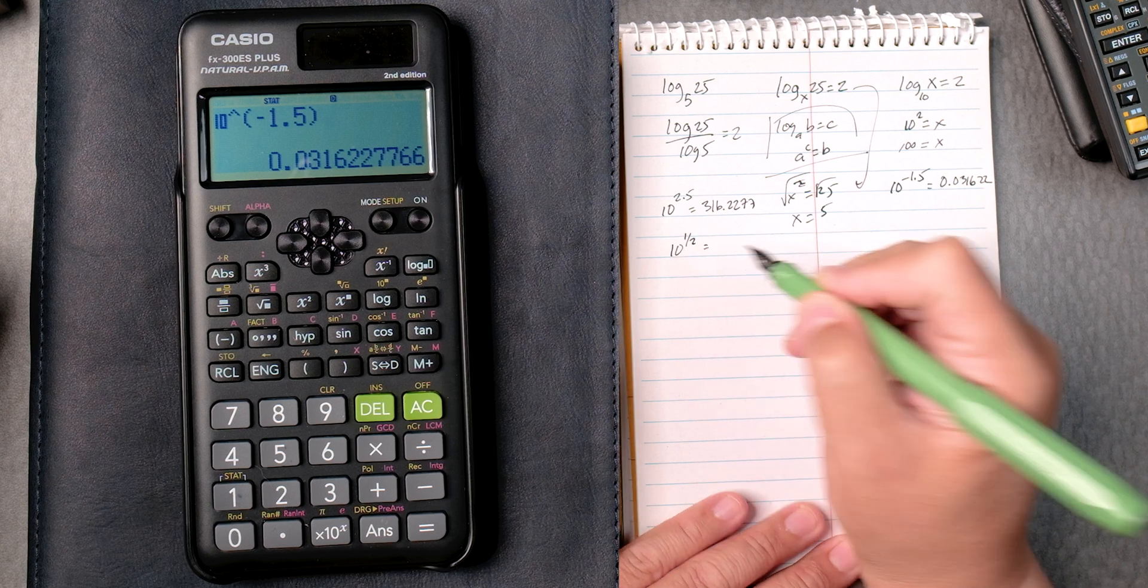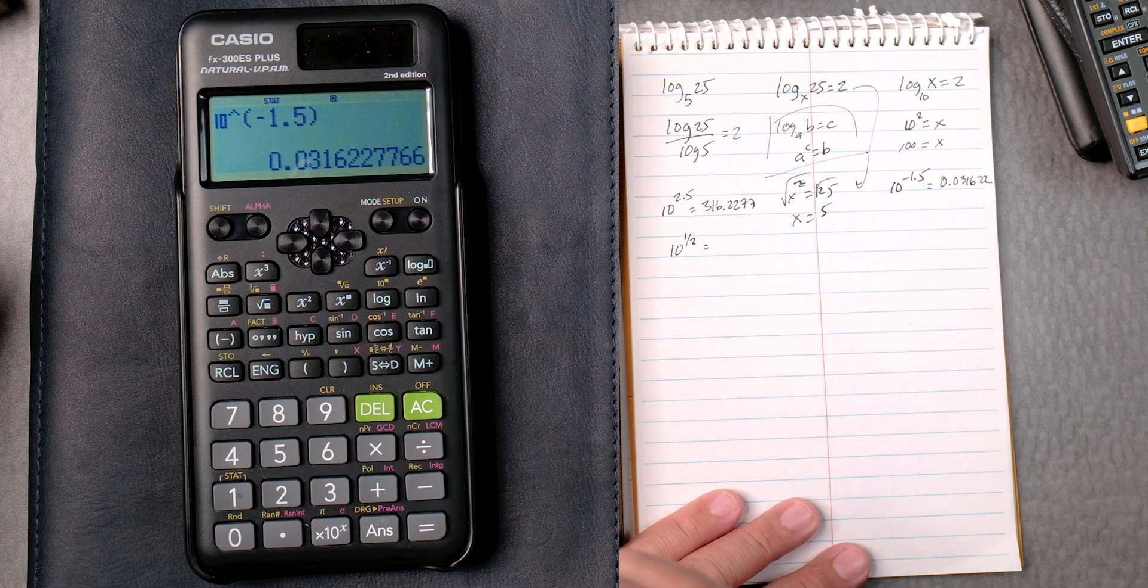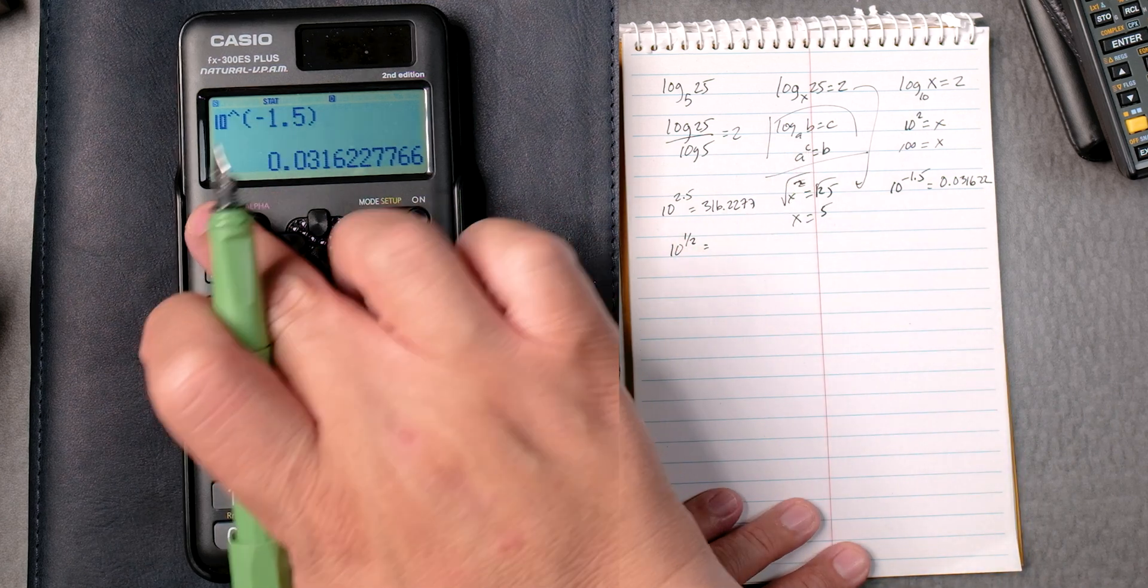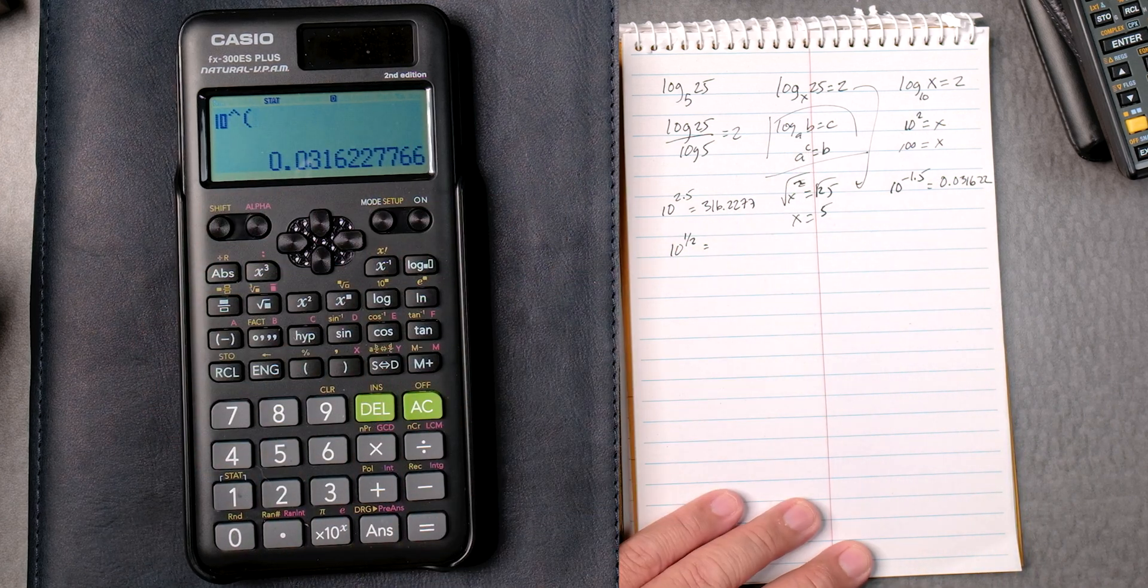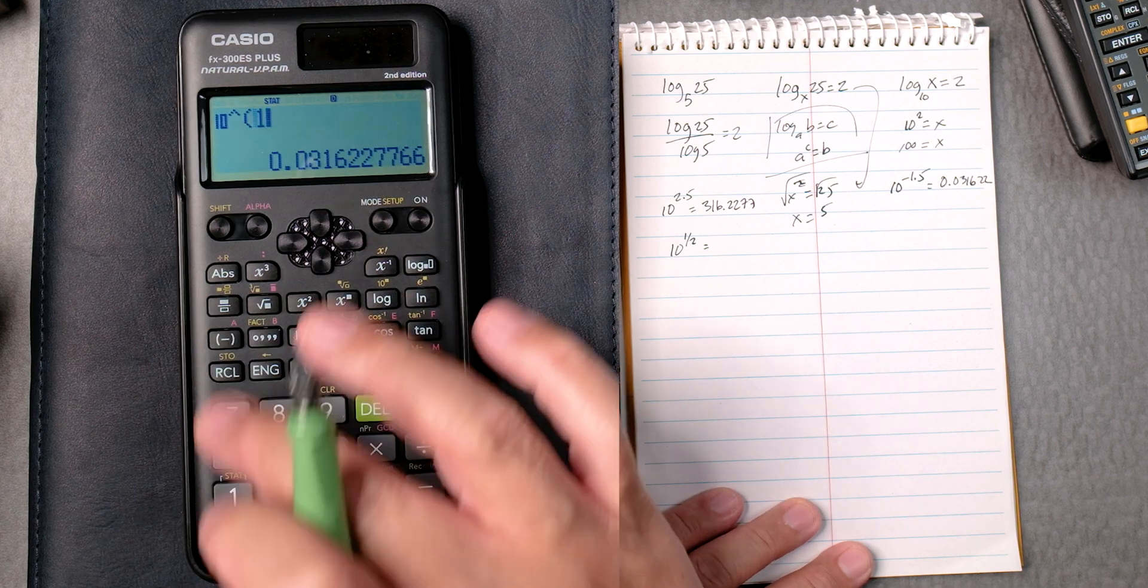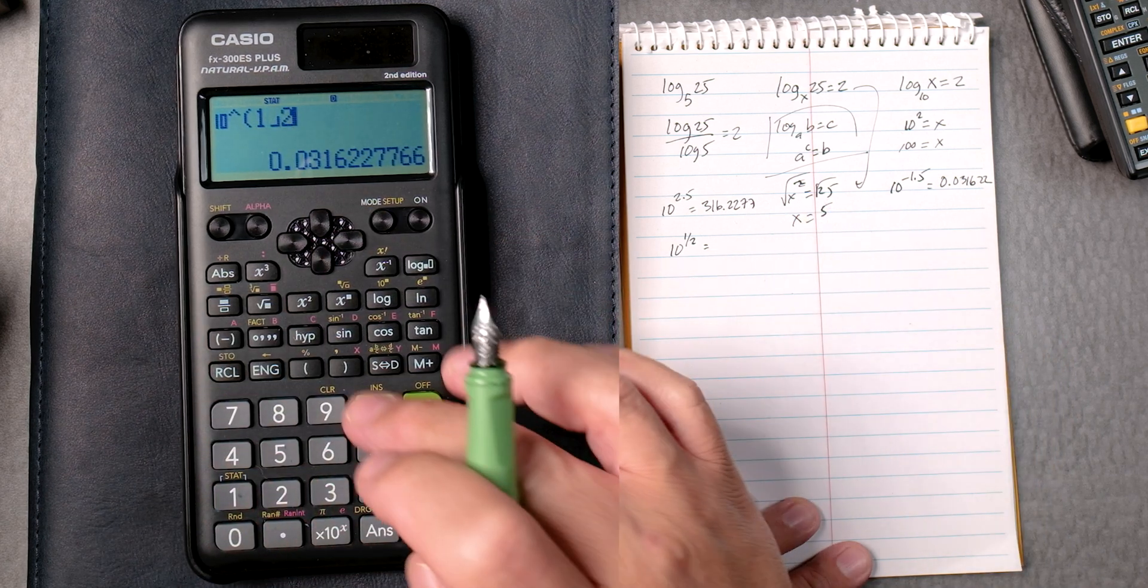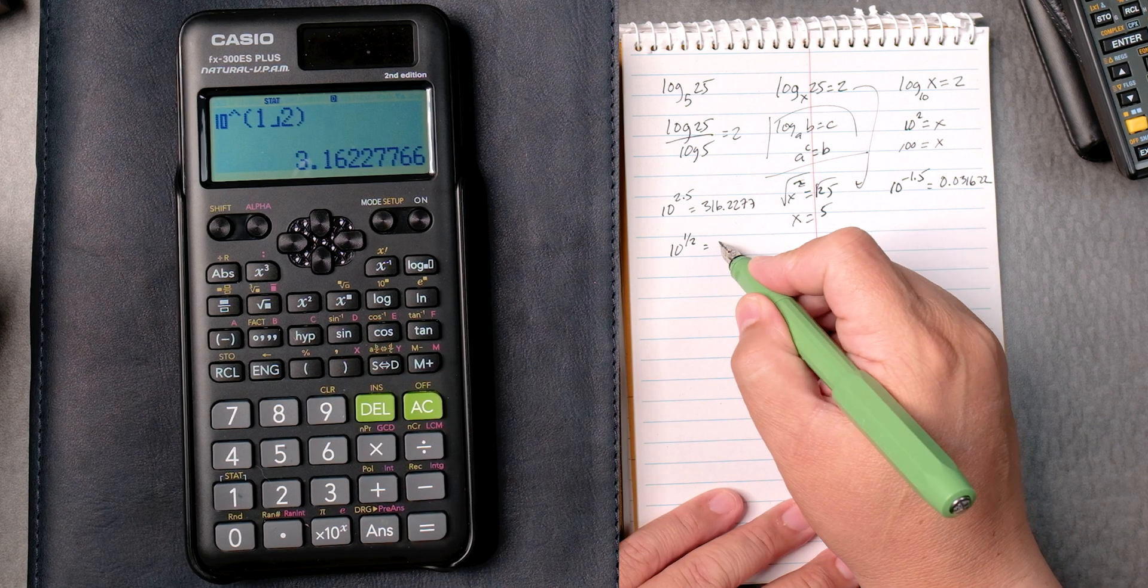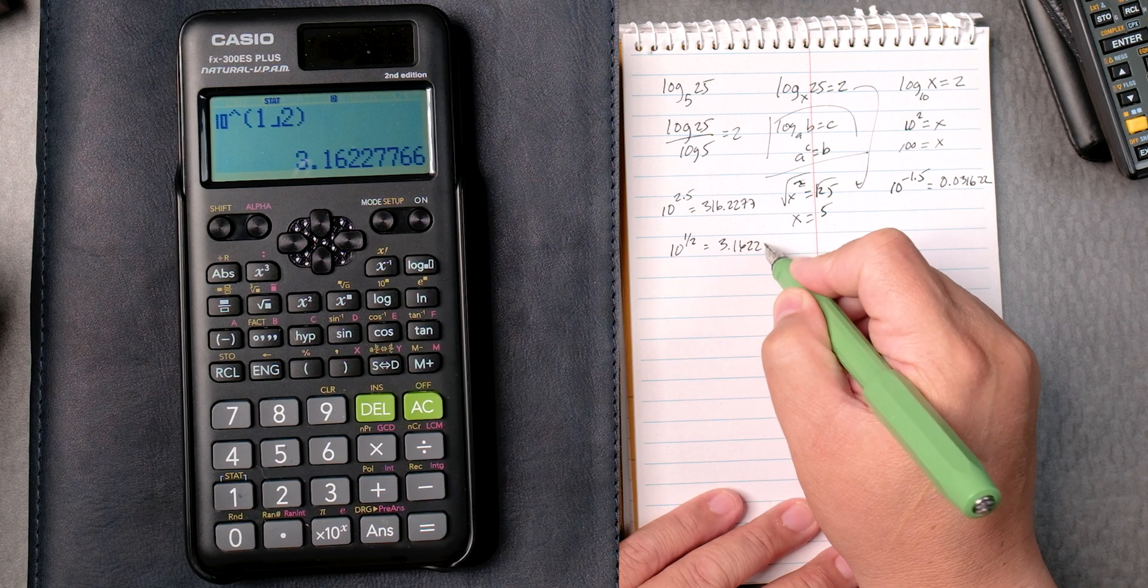10 to the half. Let's see how it deals with this. So this is the anti-log of a half. Shift, 10 to the blank. And we have a fraction button, 1, abc, or 1, fraction 2. Close it. Equals, we get 3.162277.